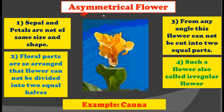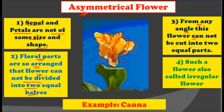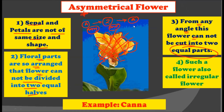The third type of symmetry in a flower is the asymmetrical flower. In this, sepals and petals are not of the same size and shape, as you can see in the picture. The floral parts are so arranged that the flower cannot be divided into two equal parts from any angle whatsoever. You should compare all three: the actinomorphic flower can be cut from any angle, the zygomorphic flower from one angle only, and the asymmetrical flower cannot be cut into two equal parts from any plane.